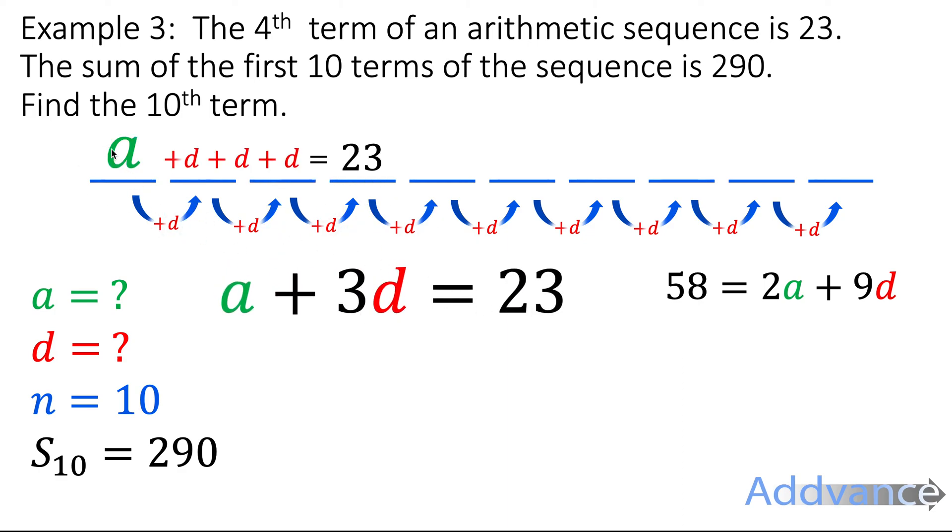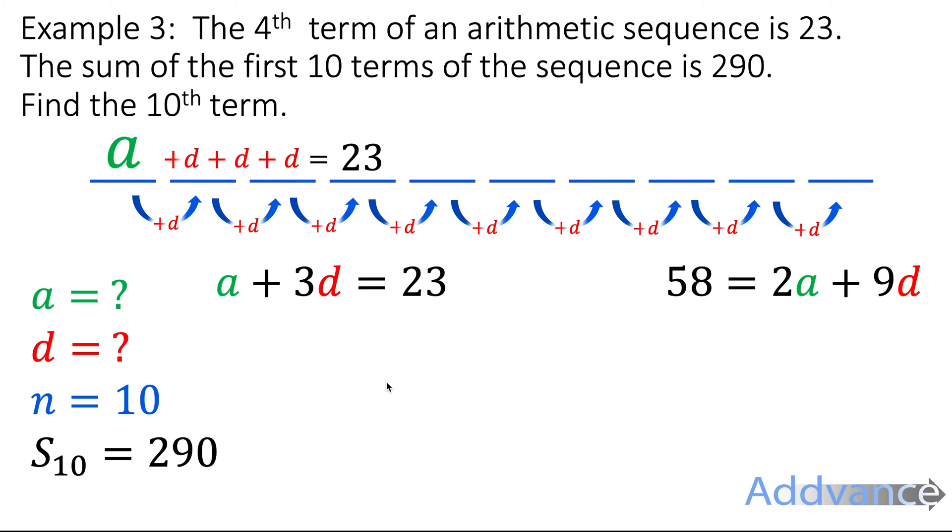Because to get to 23, you start with A and you just go up D three times. And this gives us two simultaneous equations. And that means we can solve them for A and D.